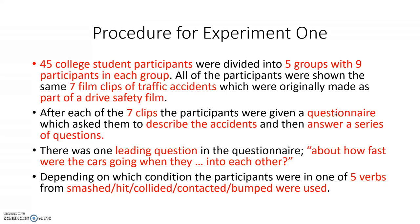Procedure for experiment one: 45 college student participants were divided into five groups with nine participants in each group. All participants were shown the same seven film clips of traffic accidents, which were originally made as part of a driver safety film. After each of the seven film clips, participants were given a questionnaire which asked them to describe the accidents and then answer a series of questions. There was one leading question about how fast the cars were going when they ______ into each other.